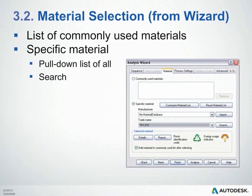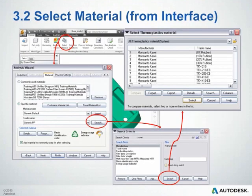Another thing you can do within the analysis wizard is select your actual material. You can first select by manufacturer and then select the actual grade you wish to use for your analysis. There's also a search option. Once you use the software for a while, it will store commonly used materials towards the top of this menu. Like with many tools in the software, you can access material selection from more than one location — from the ribbon or the analysis wizard — with no difference in tools or functionality.